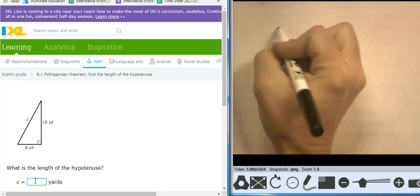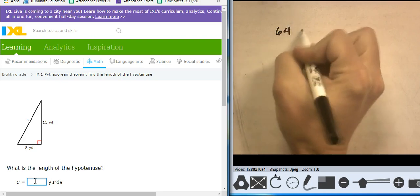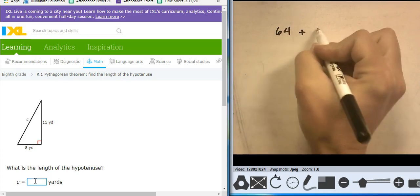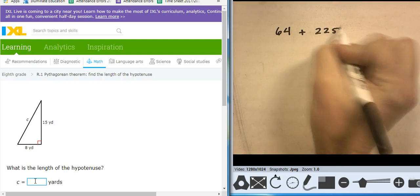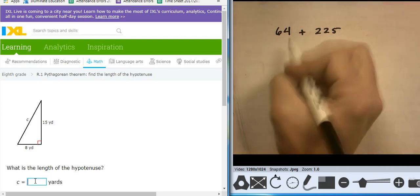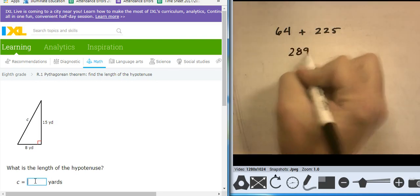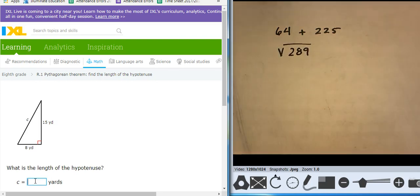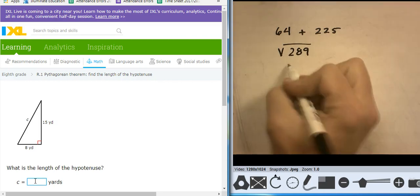Let's see. 8 squared is 64. 15 squared is 225. Add those together. That gives me 289. I take the square root of 289. And I get 17.